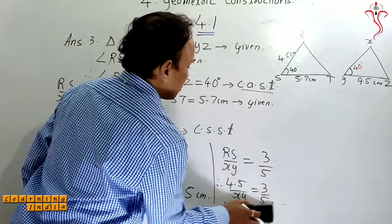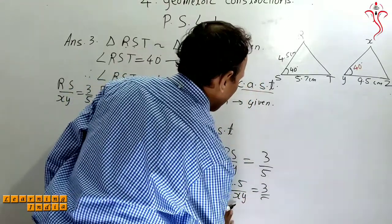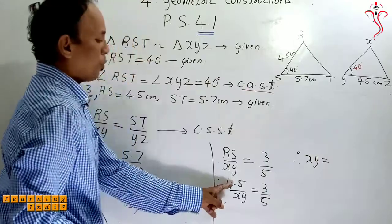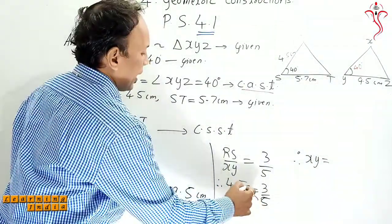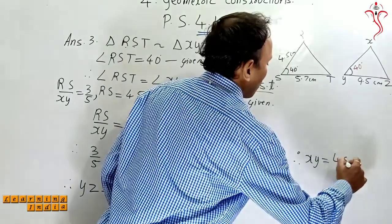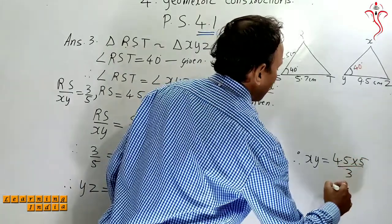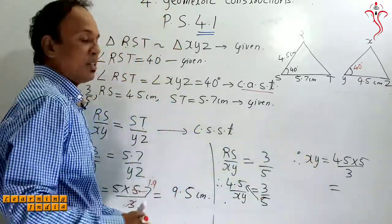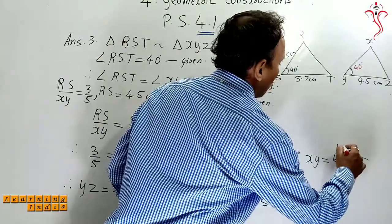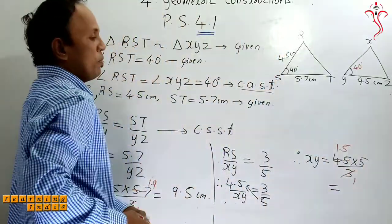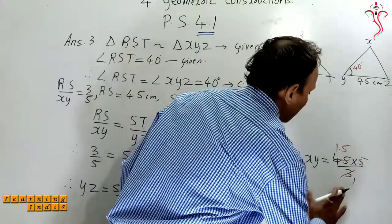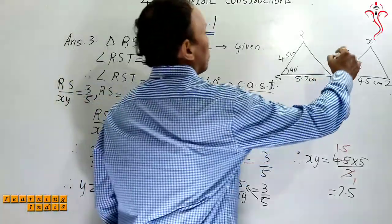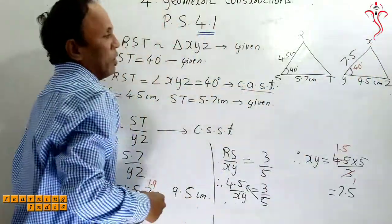So write it here. Therefore XY is equal to 4.5 into 5, and I can divide by 3. 4.5 multiply by 5 divided by 3. 3 ones are 3, 3 fifteens are 45. So I am getting here 1.5, so 15 into 5 is 75. So I can write here is equal to 7.5. So my XY value is 7.5. I will write here XY value as 7.5.